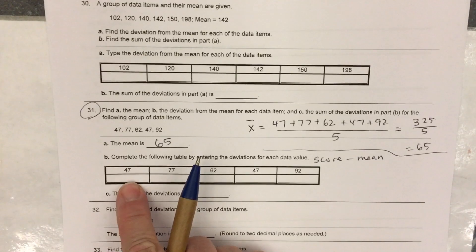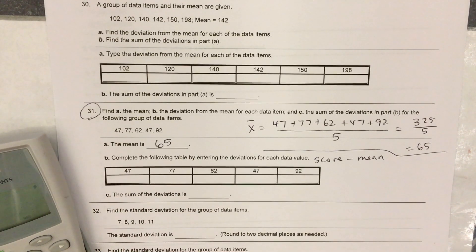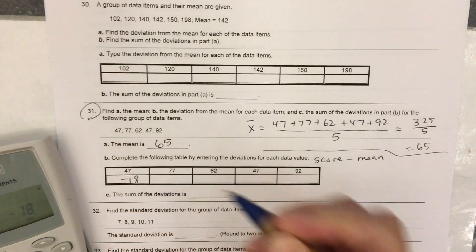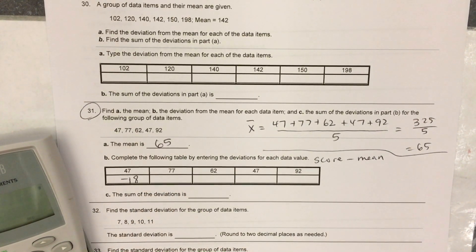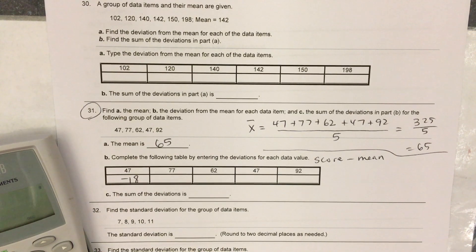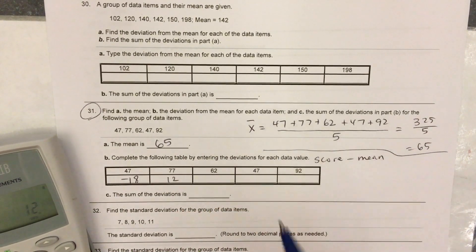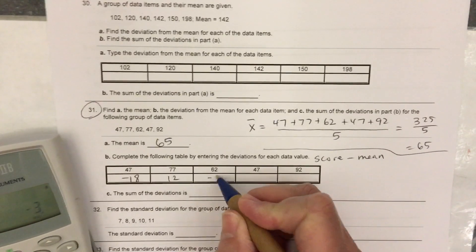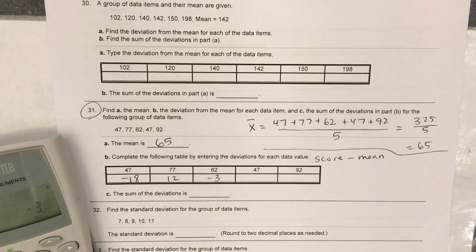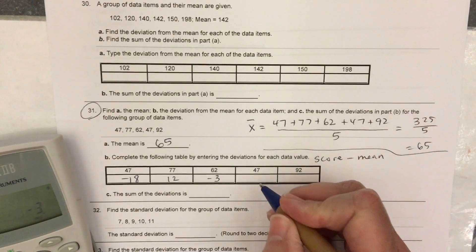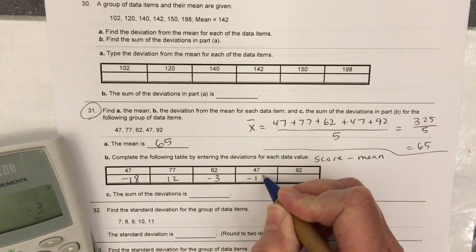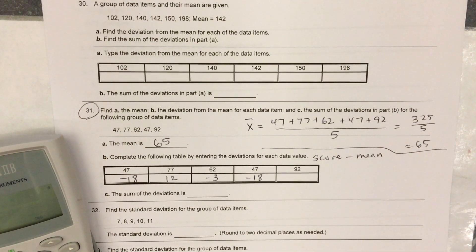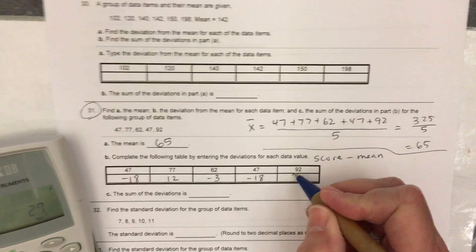In the first blank, 47 minus 65, negative 18. In the next blank, 77 minus 65, that's positive 12. 62 minus 65 is negative 3. 47 again, 47 minus 65 is negative 18. And then 92 minus 65 is 27.